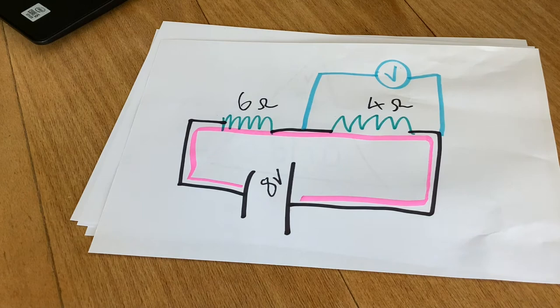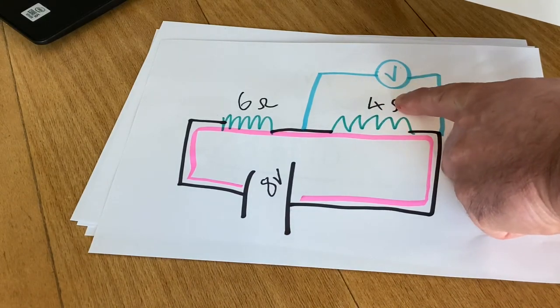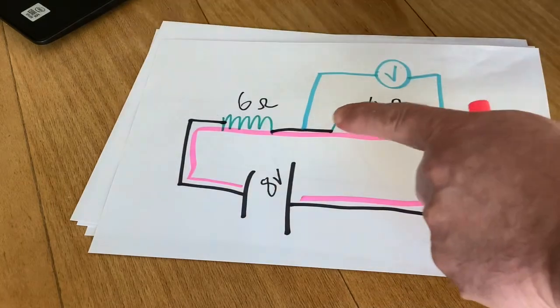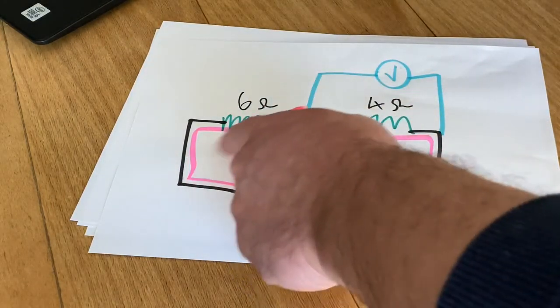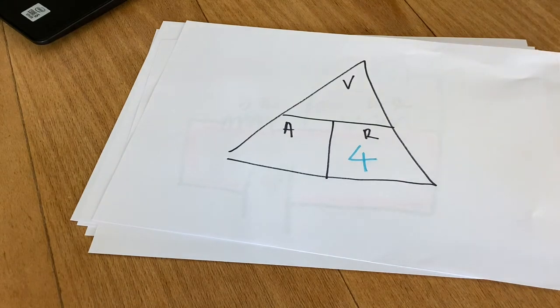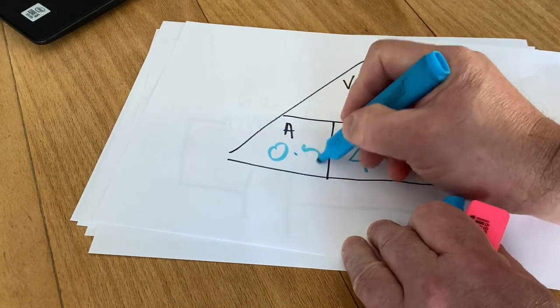So if we go back to our original triangle, pin that back up here. So we now know we've got 4 ohms resistance. So I'll put the 4 in there. And we've just calculated that the current flowing through here is 0.8 amps. So I'm just going to write in 0.8 amps.